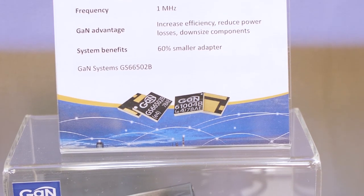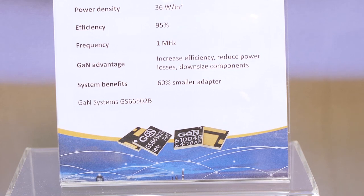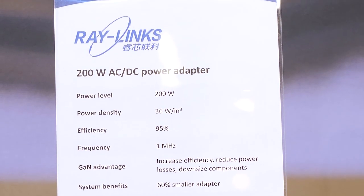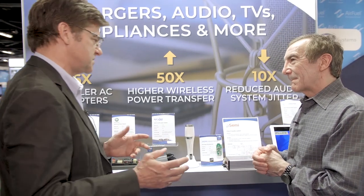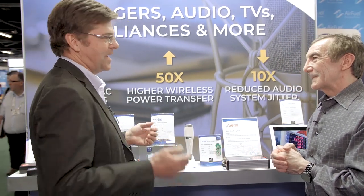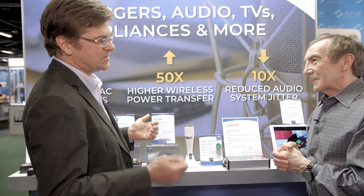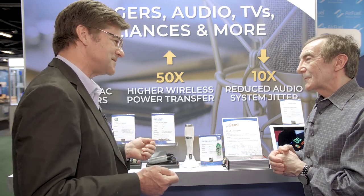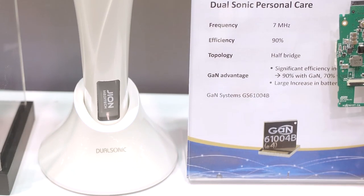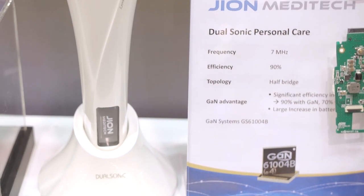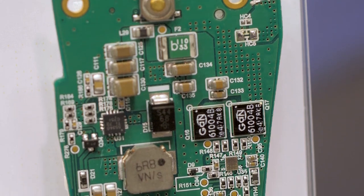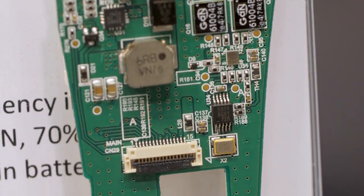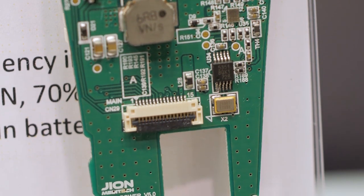Tell us a little bit about this dual sonic personal care circuit. Everybody thinks about GaN in data center applications and adapters and automobiles because they're really high volume. But we have a ton of customers in all types of marketplaces — modest volumes but they've found really interesting ways to use GaN transistors. This is one of my favorites right here. This is a medical instrument — a laser driver that uses our GaN transistors. Very high frequency, seven megahertz operation. GaN is perfect for those high-frequency applications.